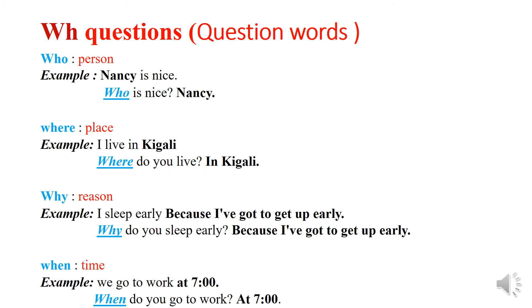WH questions — all question words. We have 'who' for person. Example: Nancy is nice. Who is nice? Nancy. When you use 'who' asking the question, the answer must be the name of a person. Nancy is a person. Nancy is nice — who is nice? Nancy.